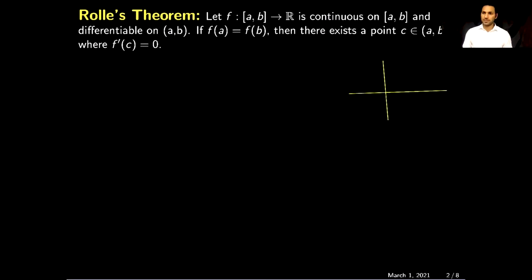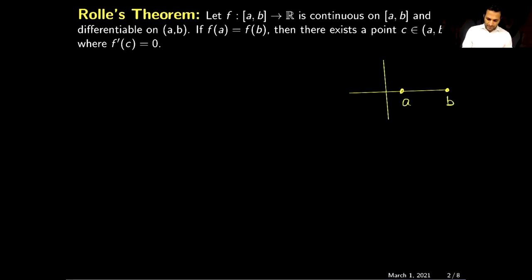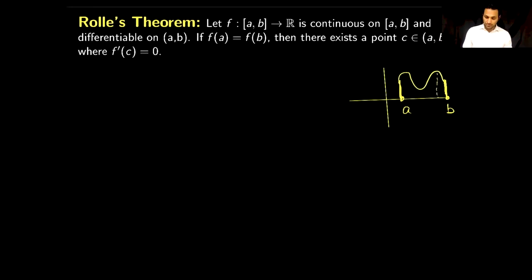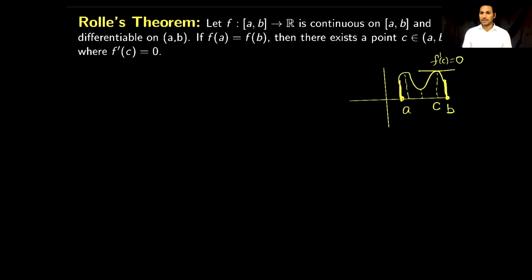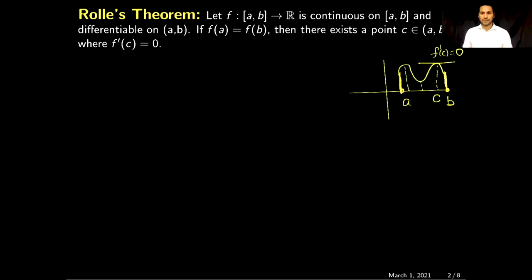Let me give you the graphical representation of this theorem. If we have a function which is continuous and differentiable on interval [a, b], and the value of the function at point a and at point b is the same, then there will exist at least one point c — it can be more than one — where the derivative f'(c) is equal to zero. As you can see in this particular function there are more points where the derivative is zero, but our goal is to show that there is at least one.